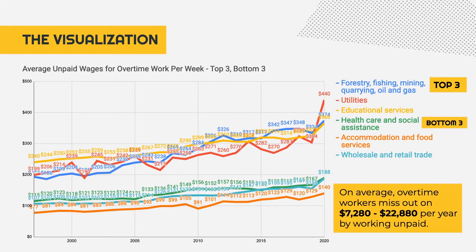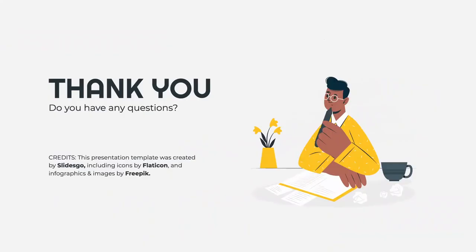In the dataset for unpaid overtime hours, the industries with the highest average hours of unpaid overtime are agriculture, which was 14 hours per week in 2020, and educational services, which was 10 hours per week in 2020. The value of the hours of unpaid work can be subjective depending on the worker, so there are certainly alternative ways to interpret these two datasets. Thank you for listening to my presentation.